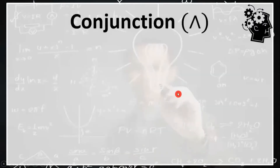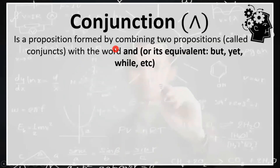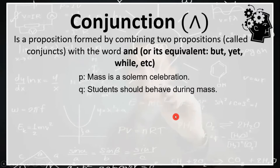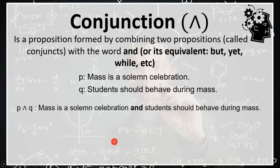The next logical operator is conjunction, denoted by the conjunction symbol. It is a proposition formed by combining two propositions called the conjuncts with the word 'and' or its equivalents: but, yet, while, and so on. For example, proposition P: mass is a solemn celebration; and proposition Q: students should behave during mass. If we combine these propositions with 'and,' a new proposition is formed, symbolized as P ∧ Q: mass is a solemn celebration, and students should behave during mass.